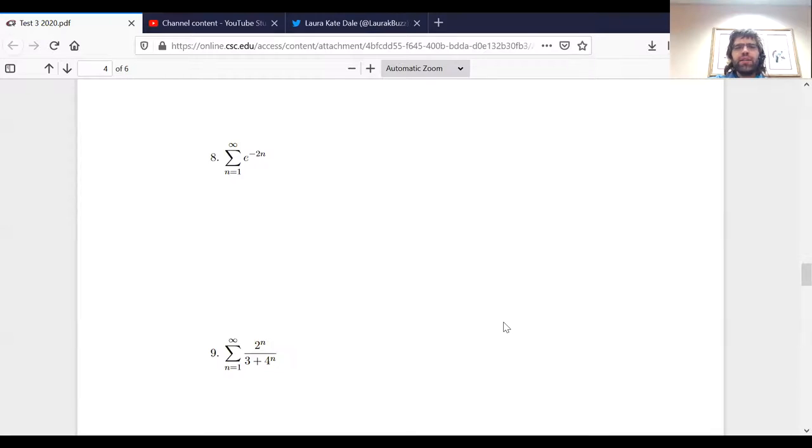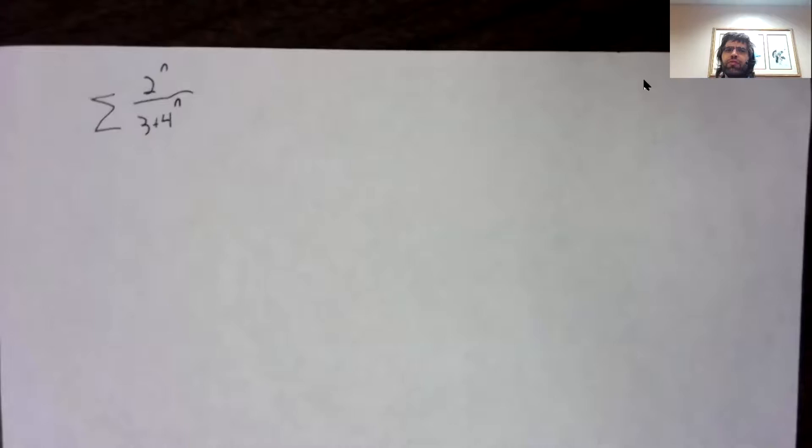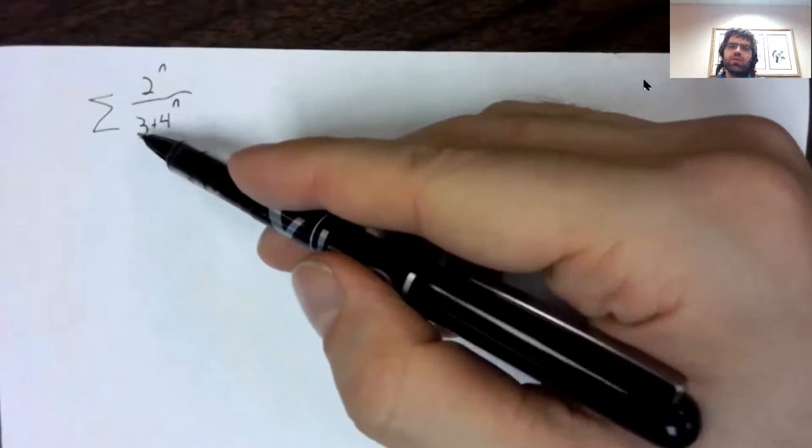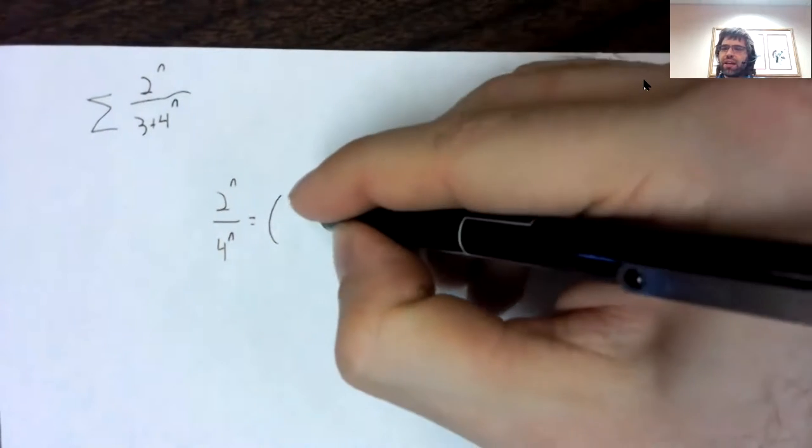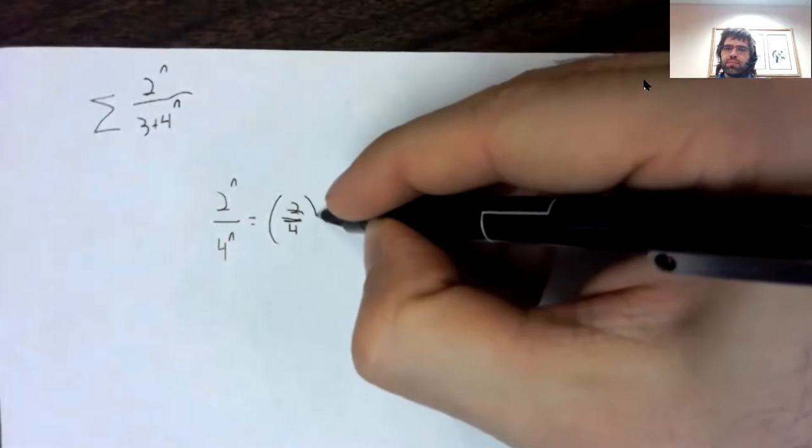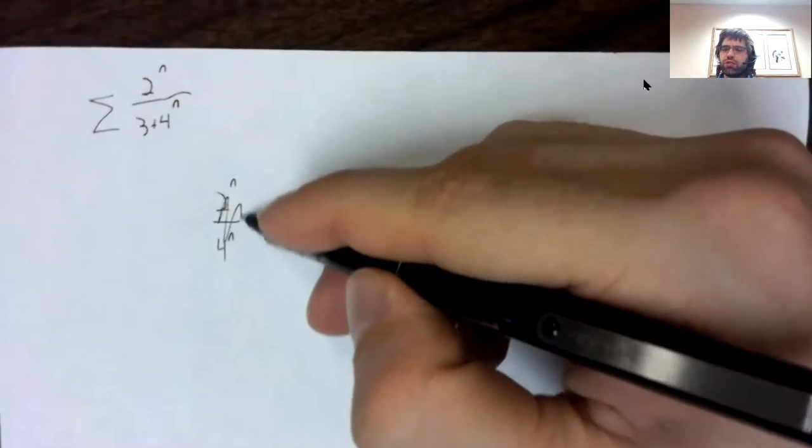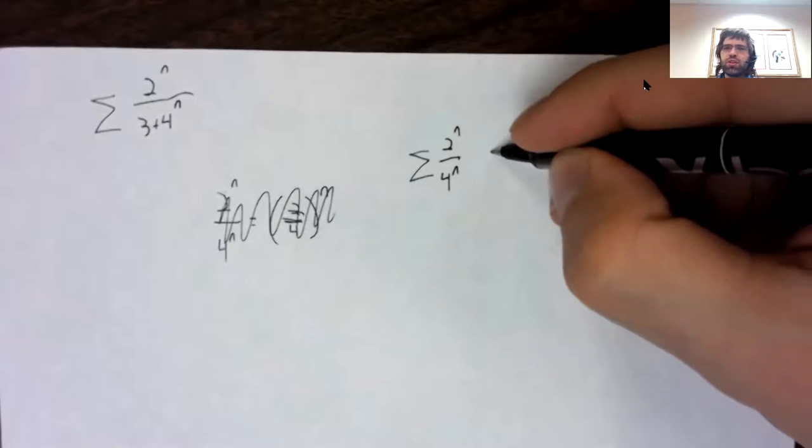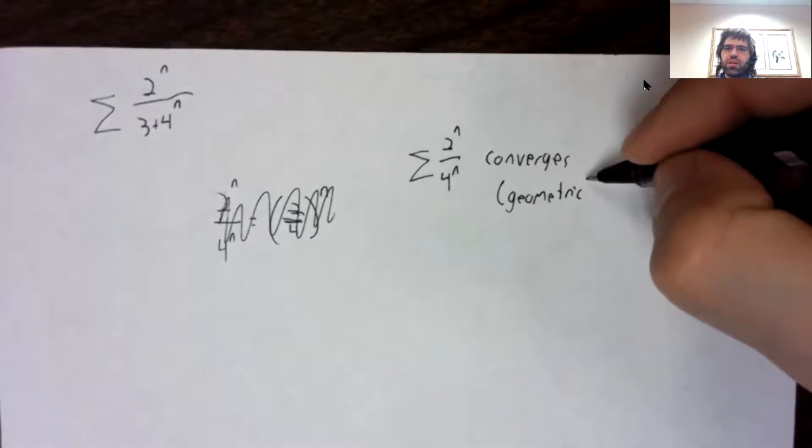Problem nine. I think I'm going to try the limit comparison test again here. My argument informally is that this exponential function is so big, this three might as well not be there. And if that three weren't there, this series would be a geometric converging series.